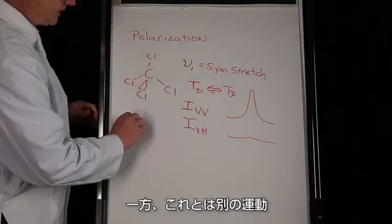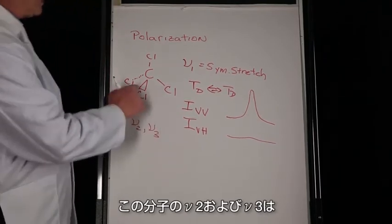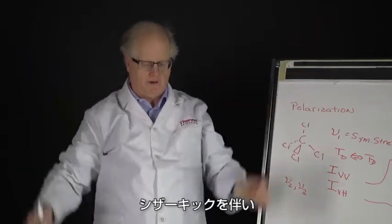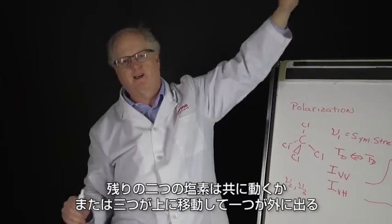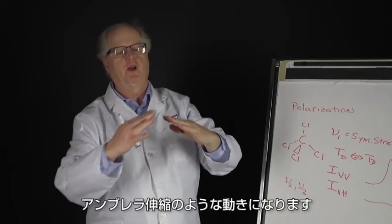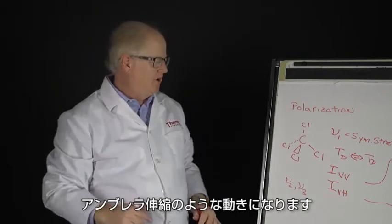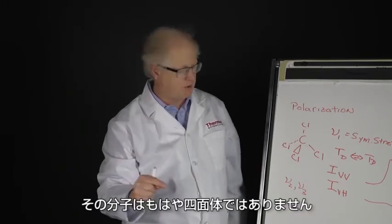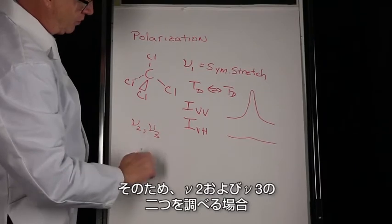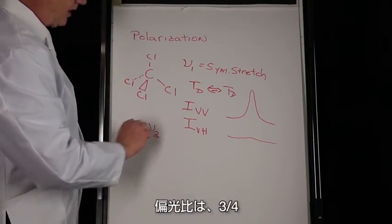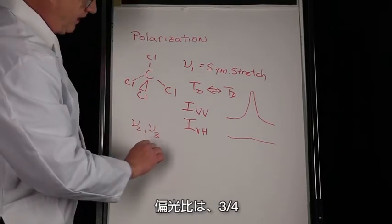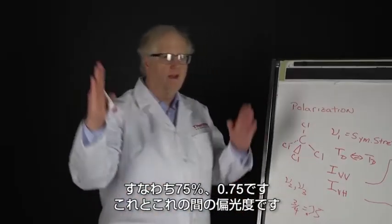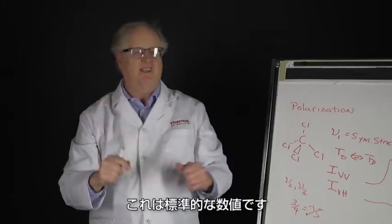Because of that, that huge peak that comes out is also polarized and goes away. On the other hand, another motion—ν2 and ν3 of this molecule—involves scissor kicks where two of the chlorines come together, the other two come together, or there's sort of an umbrella stretch where three chlorines come up, one goes out. In both of those cases, the symmetry is broken. The molecule is no longer a tetrahedron. Because of that, ν2 and ν3, if you look at those two, the ratio of the polarization is 3/4, or 75%, 0.75, between IVV and IVH.